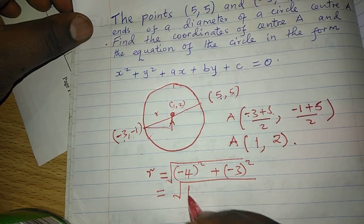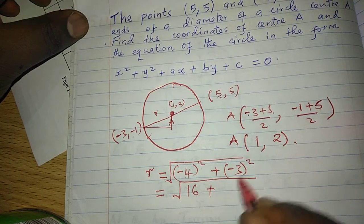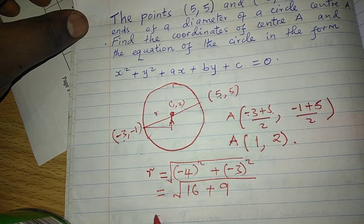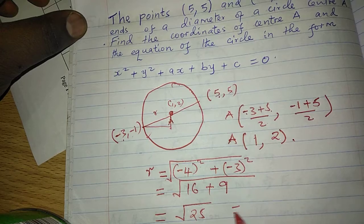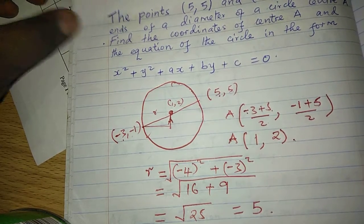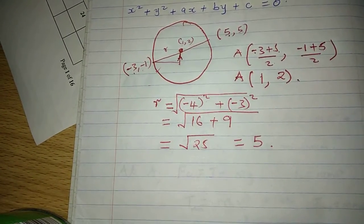when we take 4 squared we'll get 16, and 3 squared we'll get 9, and this will be the square root of 25, which will be 5 units.